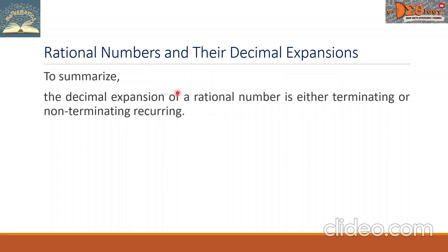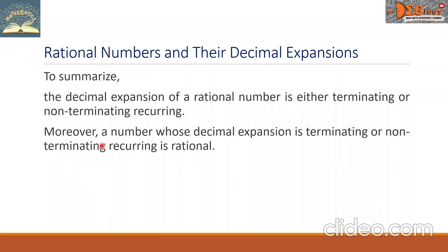To summarize, the decimal expansion of a rational number is either terminating or non-terminating recurring. Moreover, a number whose decimal expansion is terminating or non-terminating recurring is rational.